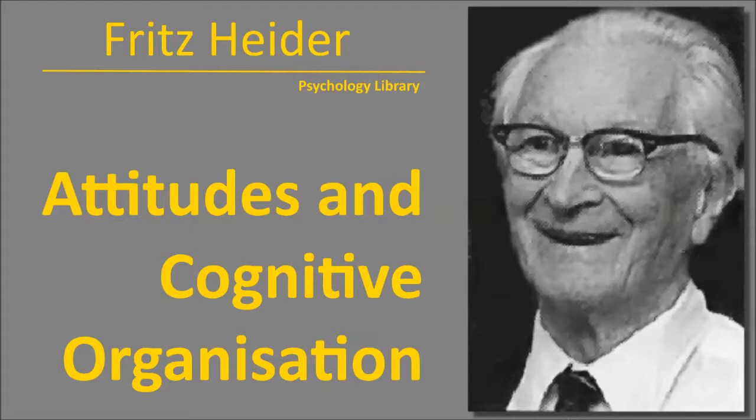Examples: P wants to be loved by an admired O. P dislikes people who despise him. O L P is similar to P L O admire P to P U O. P likes to meet people who, he is told, admire him.